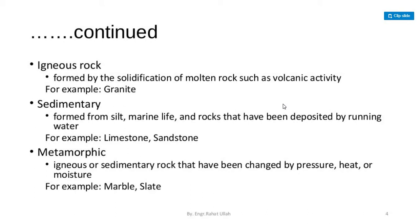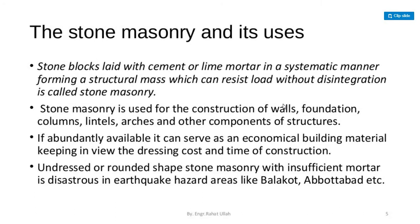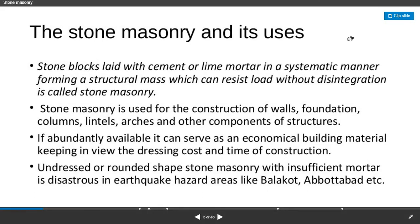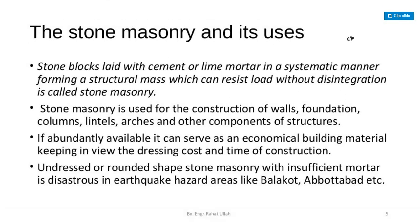Metamorphic rocks are those rocks which have been changed by pressure, heat, or moisture. So if igneous or sedimentary rocks have been changed due to pressure, heat, or moisture, then it is known as metamorphic rock. Examples of metamorphic rocks are marble and slate. Now let's discuss about stone masonry and its uses.